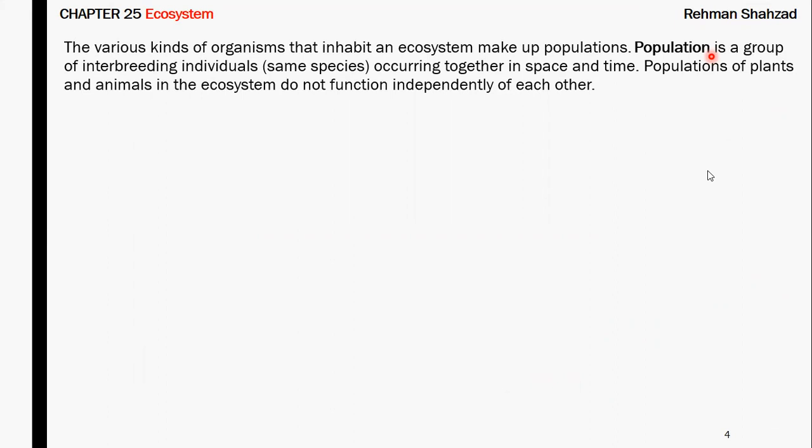In any ecosystem, the populations of animals and plants within one place never function independently. Instead, they are interconnected and interlinked with each other in one way or another.